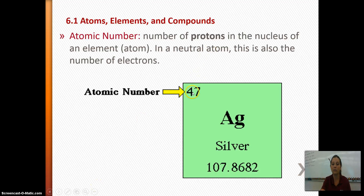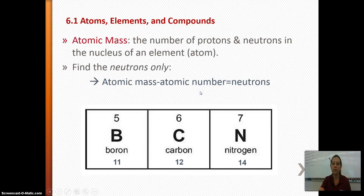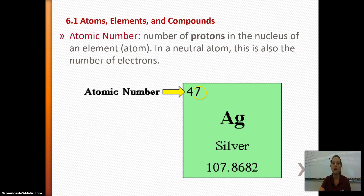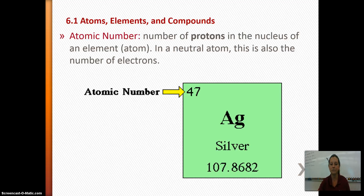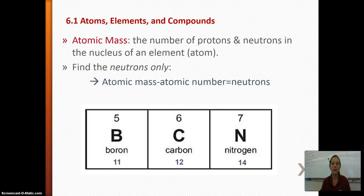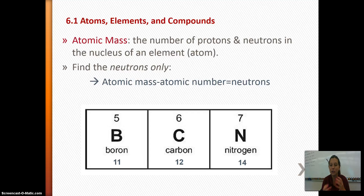So here our atomic number is 47. That tells you there are 47 protons, and it also tells you there are 47 electrons, because you've got to have the same number of protons and electrons. The atomic mass is the number of protons and neutrons found in the nucleus of the atom. Electrons are so tiny that they essentially have no mass — it's almost like they're just a form of negative energy.